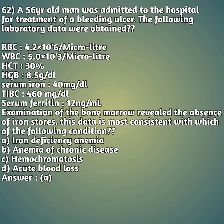Moving on to our 62nd question - a 56-year-old man was admitted to the hospital for treatment of a bleeding ulcer. Laboratory data obtained: RBC is 4.2 × 10⁶/µL, WBC is 5.0 × 10³/µL, HCT is 30%, HB is 8.5 g/dL, serum iron is 40 µg/dL, total iron binding capacity is 460 µg/dL, serum ferritin is 12 ng/mL. Examination of bone marrow revealed absence of iron stores. This data is most consistent with which condition? Option A: iron deficiency anemia. Option B: anemia of chronic disease. Option C: hemochromatosis. Option D: acute blood loss.